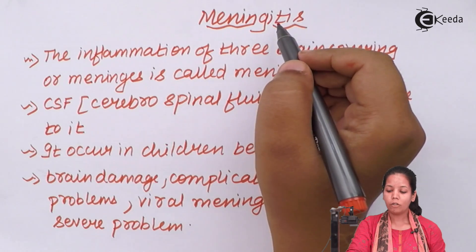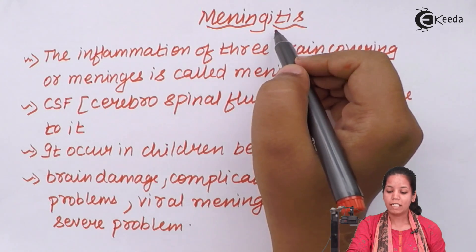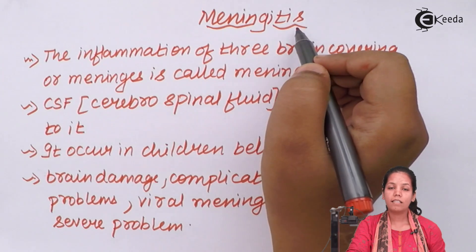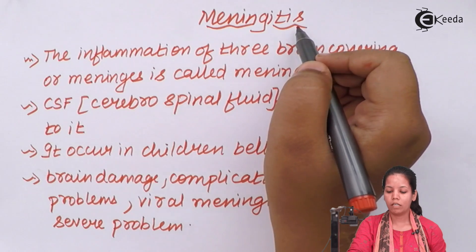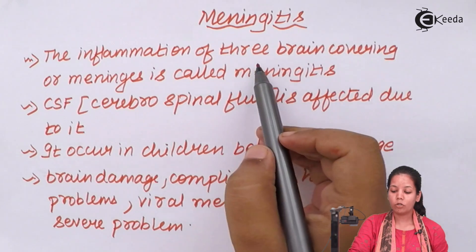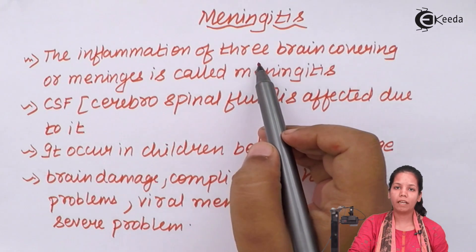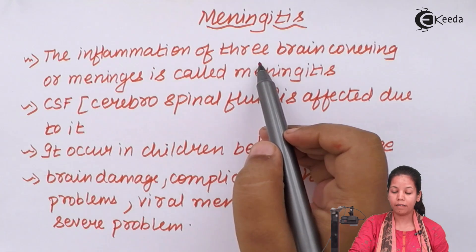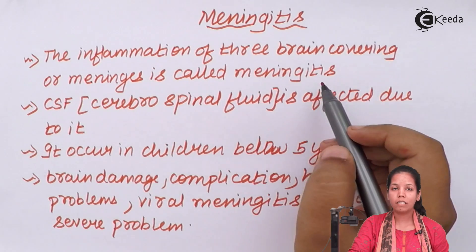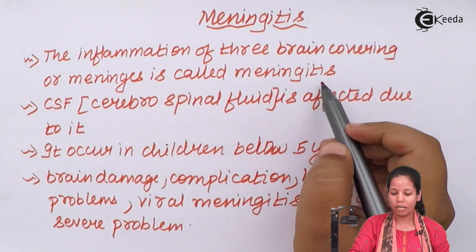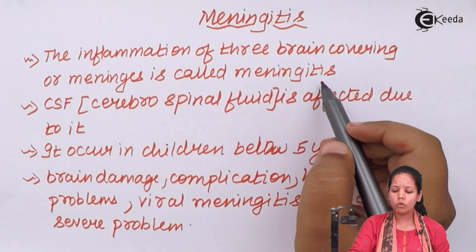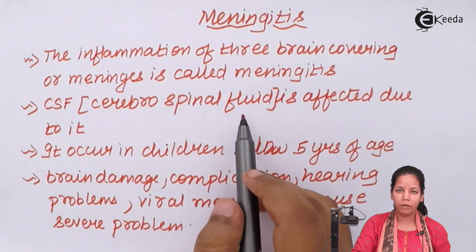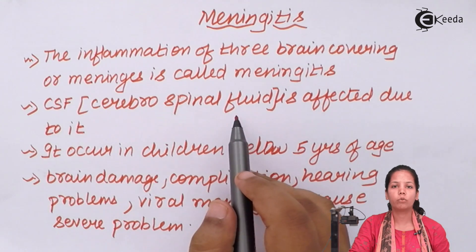Meningitis — the suffix 'itis' means inflammation. The inflammation of the three brain meninges — arachnoid matter, dura matter, and pia matter — which are coverings of the brain, is termed as meningitis. Also, CSF or cerebrospinal fluid is mainly affected due to it.